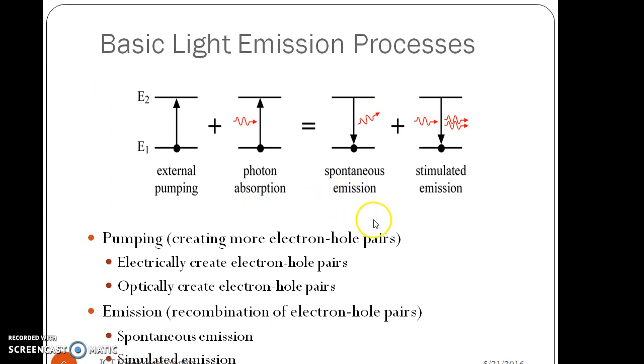The basic light emission process which takes place in any optical source has two parts. One is the external pumping or external excitation and the second one is absorption. The third one is the emission of light. The emission of light has two types: Spontaneous emission and stimulated emission. Spontaneous emission takes place in LED. Stimulated emission takes place in laser.